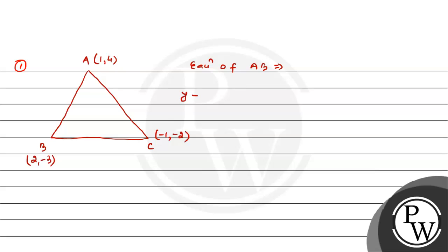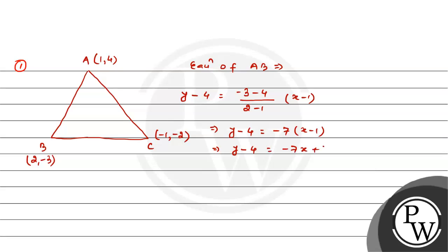For side AB: y minus y1 equals (y2 minus y1) by (x2 minus x1) into (x minus x1). Taking y1 as 4, this gives y minus 4 equals (-3 minus 4) by (2 minus 1) into (x minus 1), which becomes y minus 4 equals -7(x minus 1). This simplifies to 7x plus y minus 11 equals 0. Checking with point (1,4): 7 plus 4 minus 11 equals 0. And with (2,-3): 14 minus 3 minus 11 equals 0. Correct.